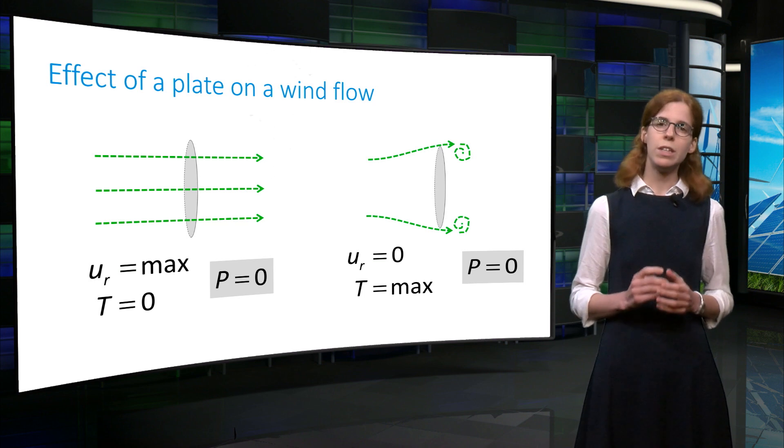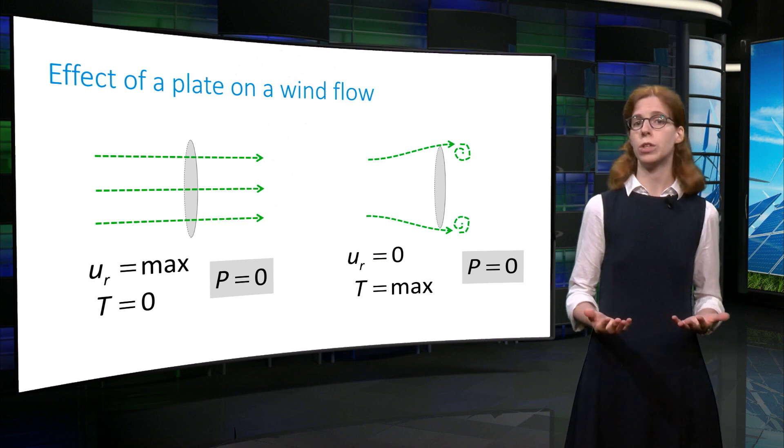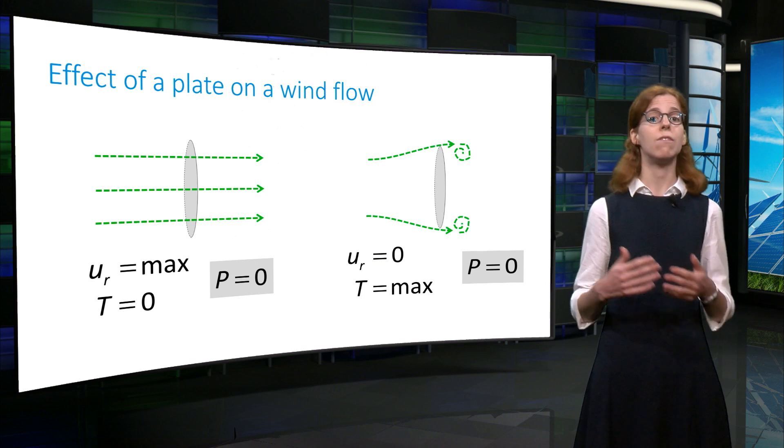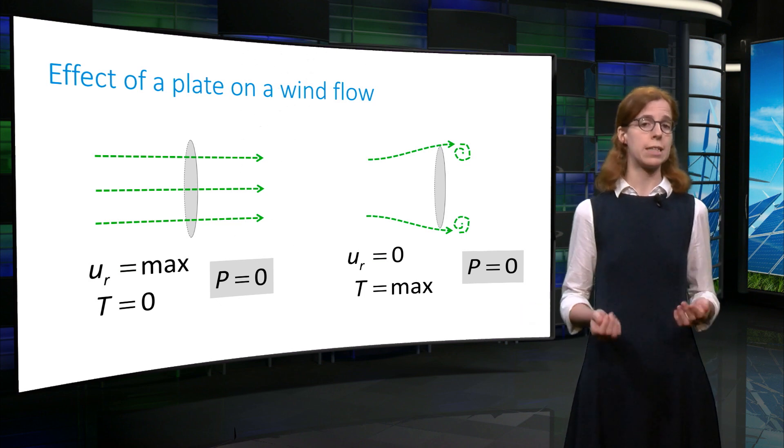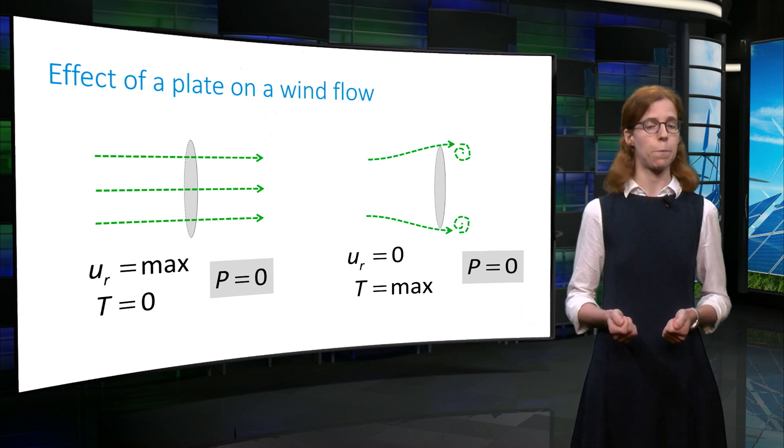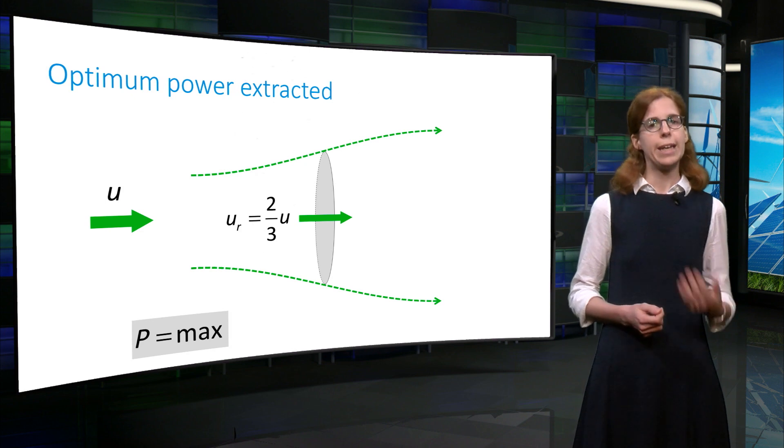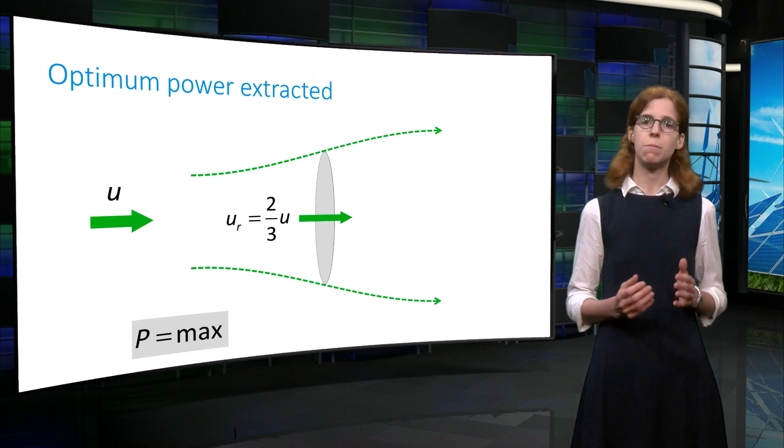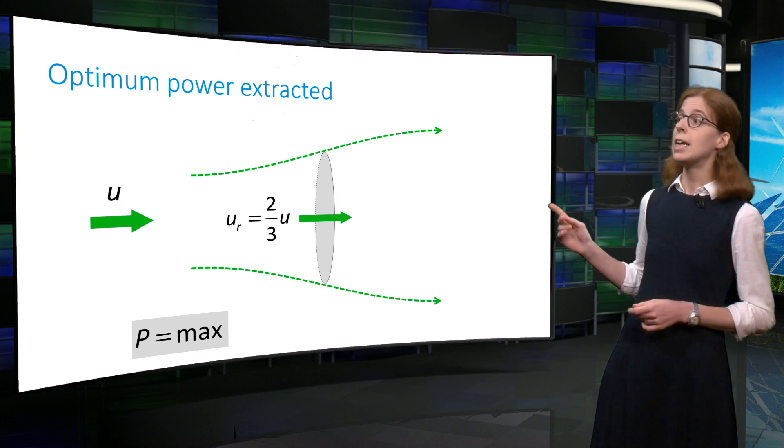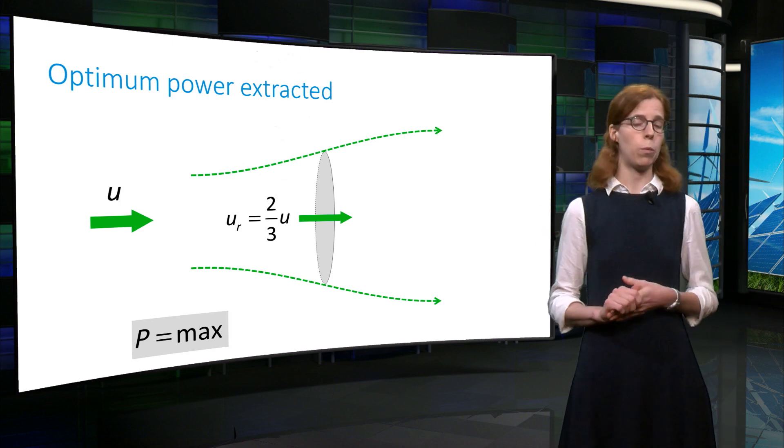Thus, even intuitively, there should be an optimum combination of force T and velocity at the rotor that maximizes the power. It can be shown that the power is maximum when the velocity at the disk is two-thirds of the incoming wind speed.